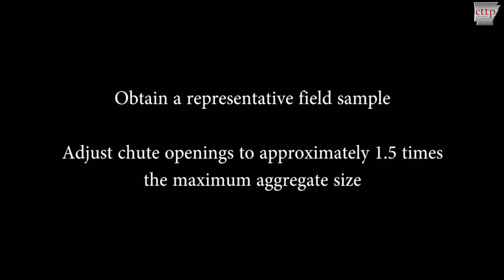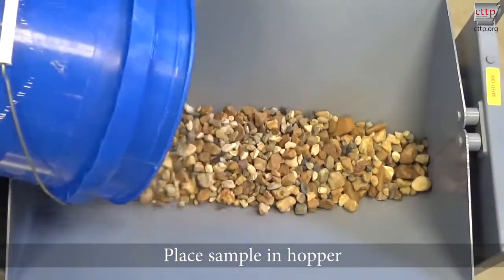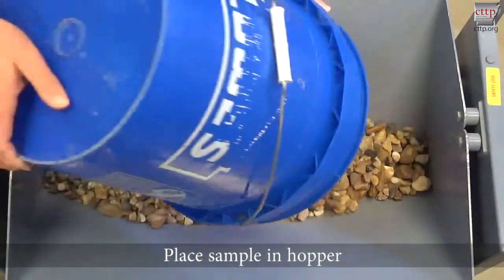Obtain a representative field sample. Adjust the chute openings to approximately 1.5 times the maximum aggregate size. Place the sample in the hopper.